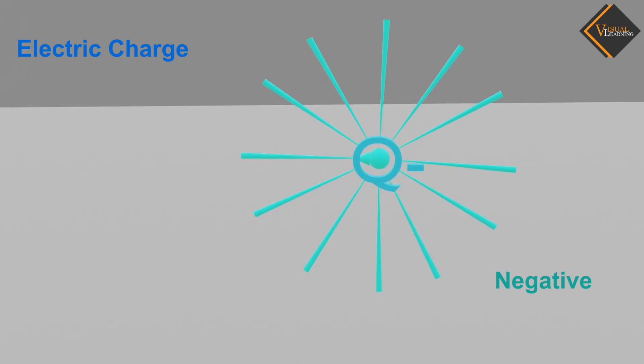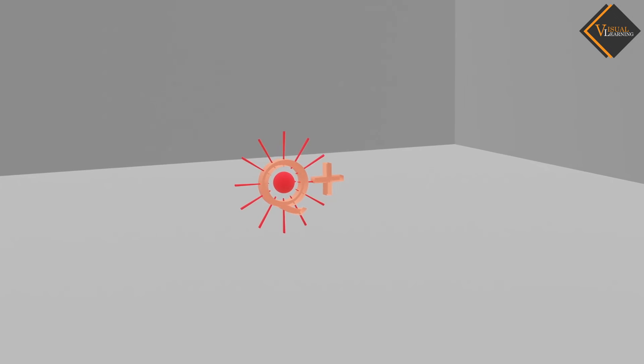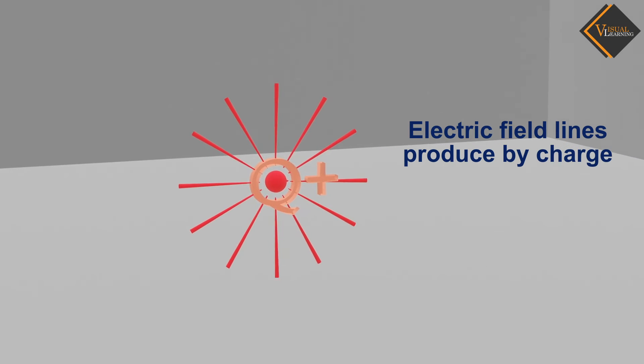Each charge produces electric field lines, with positive charges having outward lines and negative charges having inward lines.